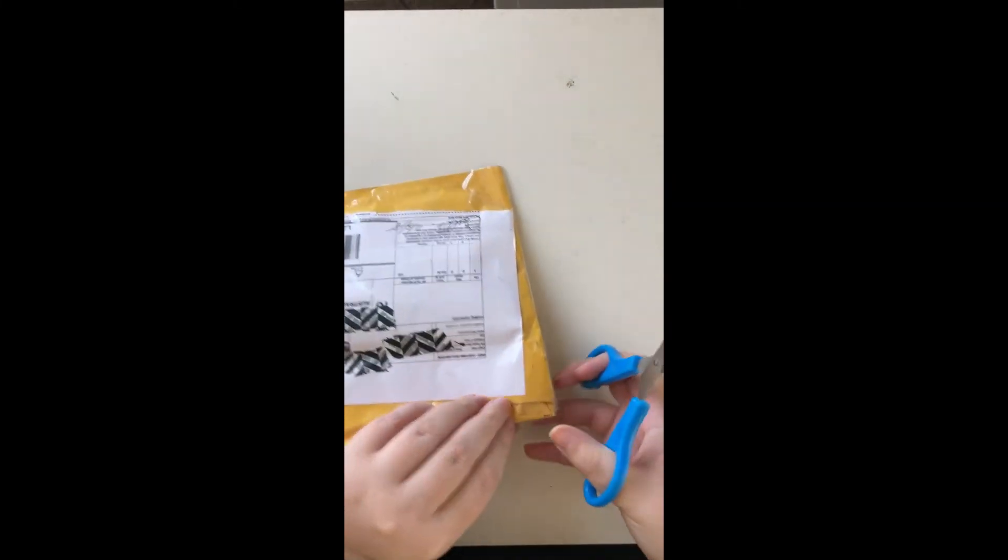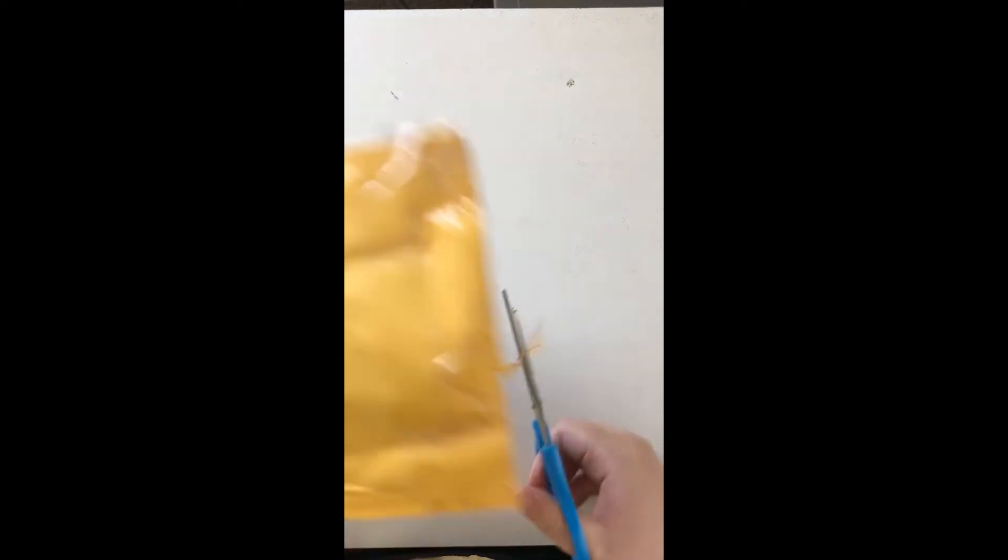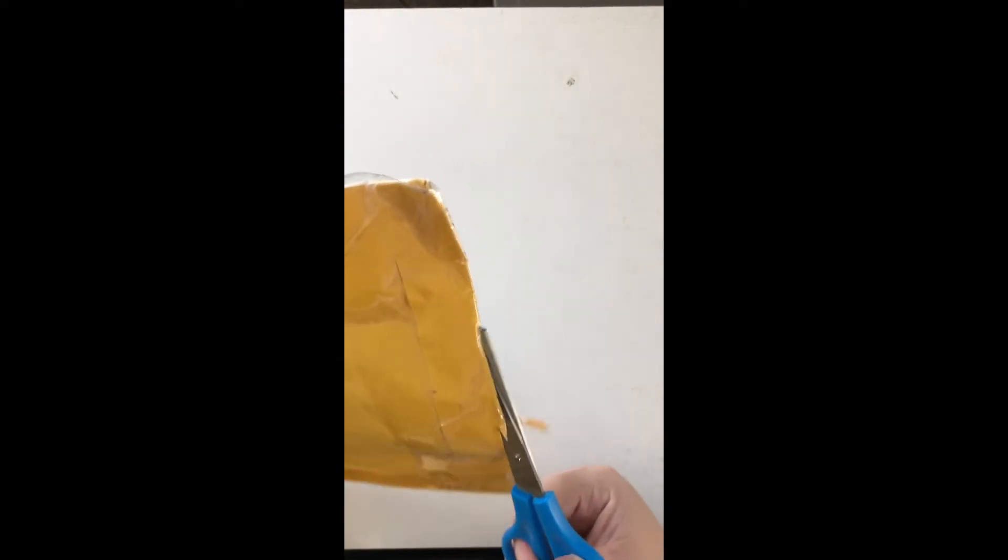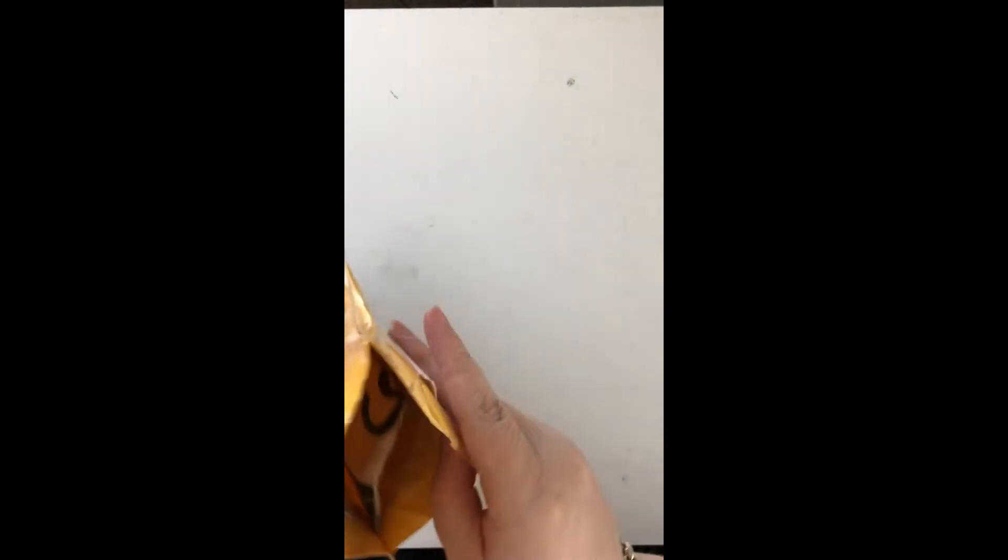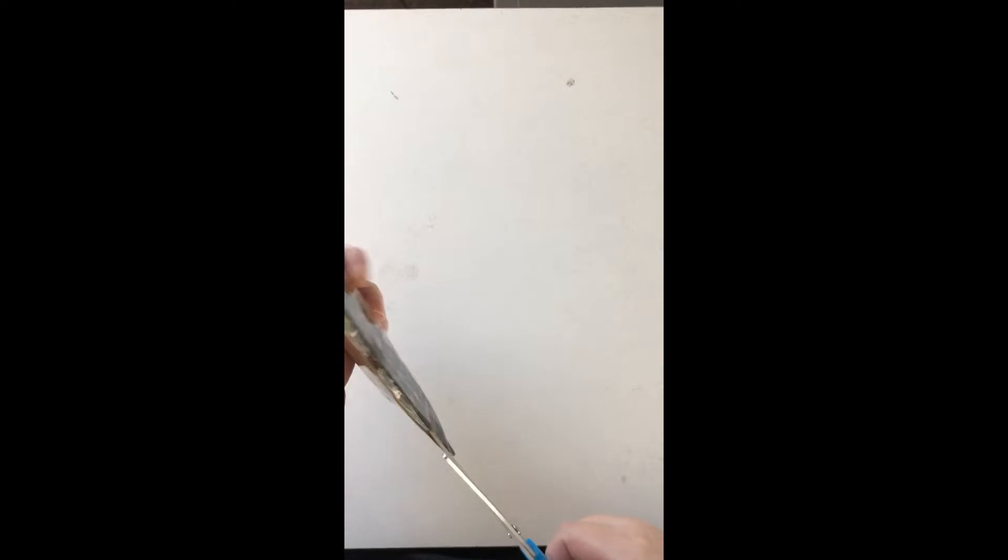The lovely woman that handles all the orders and everything did warn me that it was taped up like Fort Knox. So let's see how we go. Cut right along the edge here. So I don't want to cut anything important. So it's in a padded envelope. It's got like the bubble wrap on the inside. And then it's wrapped in cardboard, which protects it even more.